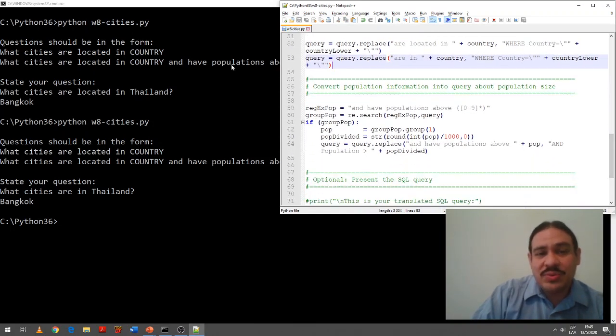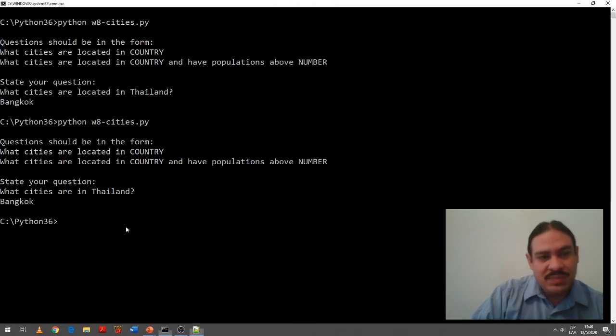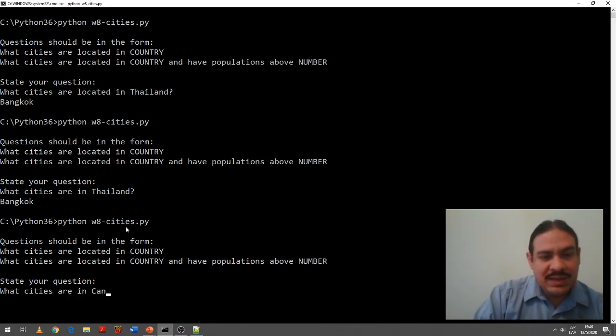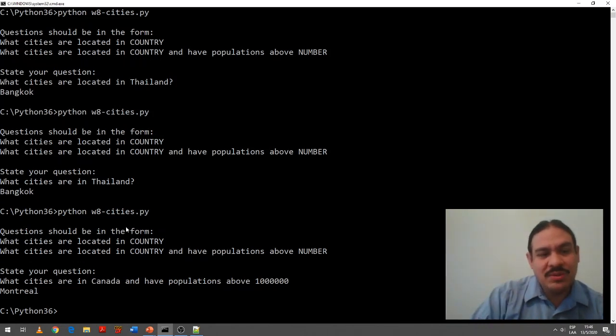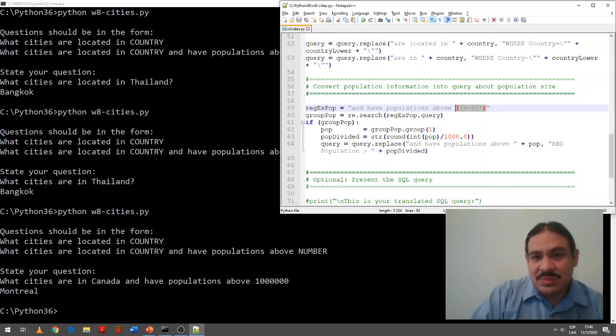Finally, if you have the question with the populations, it does an additional procedure. It has another capturing group to get the number. So, this is the question that we had for the cities in Canada. What cities are in Canada and have populations above 1 million? For example, Montreal. So, here and have populations above a number which is a capturing group. We put the number here and then divided by a thousand because that's the format that the table is in. And then replace the phrase and have populations above plus the population number with the SQL command that searches for this. And the population is greater than the actual number.